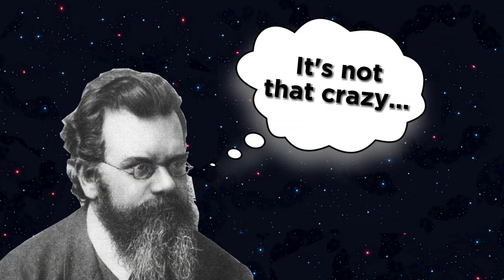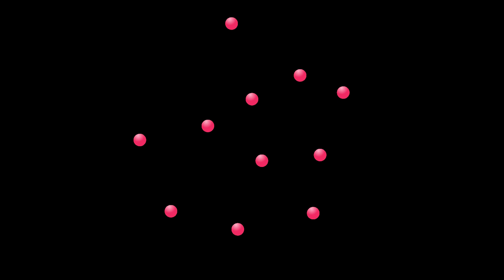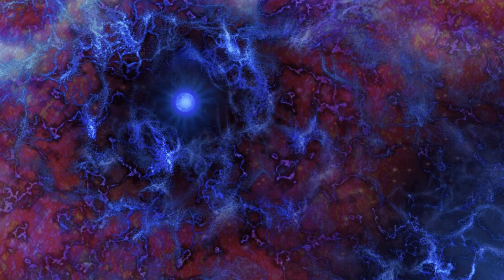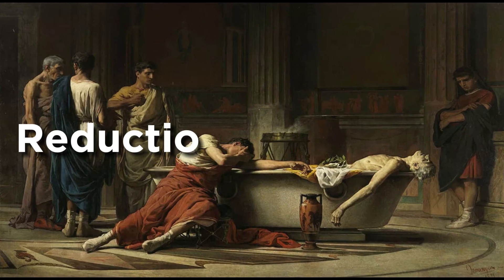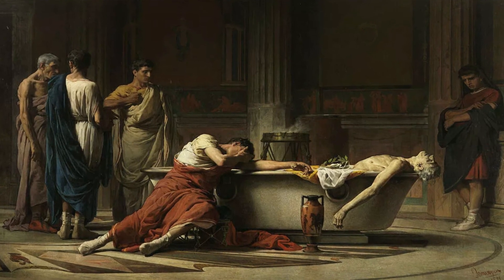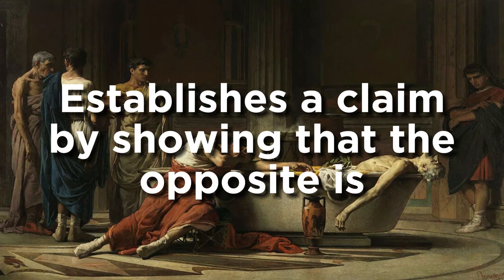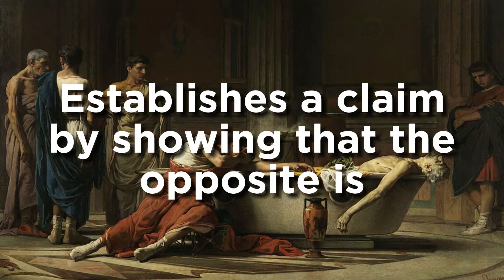Ludwig Boltzmann believed that the universe is not as chaotic as it seems. He believed that in the universe's final state, it would spontaneously fluctuate to a lower entropy state, like that at the beginning of the universe during the time of the big bang. He came up with the Boltzmann brain hypothesis as a way to defend this theory, by the use of reductio ad absurdum, the form of argument that establishes a claim by showing that the opposite is, well, absurd.